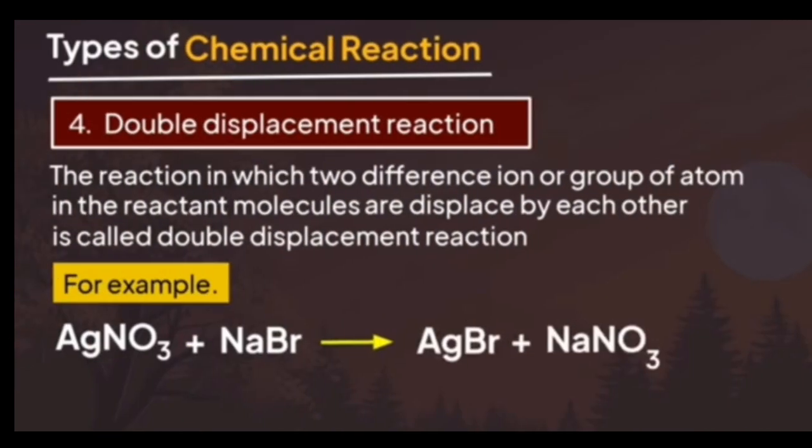Double displacement reaction is the reaction in which two different ions or groups of atoms in the reactant molecules are displaced at the same time.